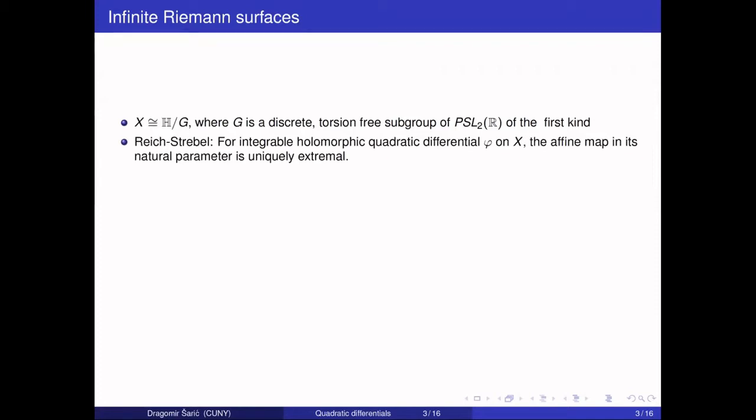Going in the same direction as in the compact surface case, Reichel-Strebel proved that if you have an integrable holomorphic quadratic differential on X—on an infinite surface you have many different classes of quadratic differentials, and here the condition of being integrable is important—then when you take the natural parameter, the affine maps which do vertical shrinking and horizontal stretching are uniquely extremal. That is a result of Reichel-Strebel. However, there is also an anomaly: not every homotopy class has such a nice extremal representative.